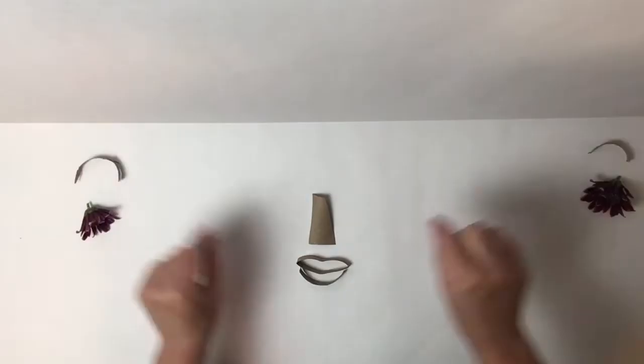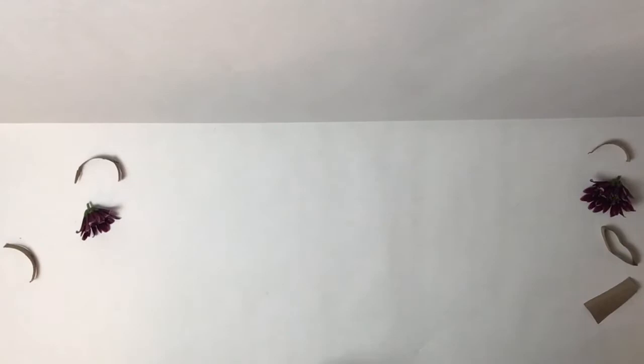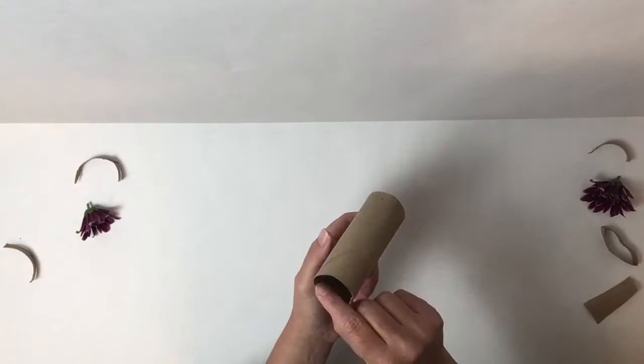So for this lovely face that you see here, I used a couple of flowers and a toilet paper tube. As you can see I just had a little vase of flowers and a toilet paper tube. I'm going to show you how we can build these faces in a variety of ways. You can really use anything.